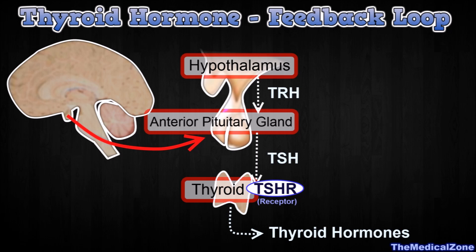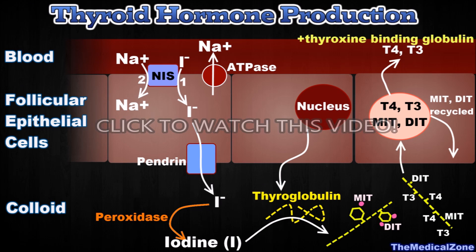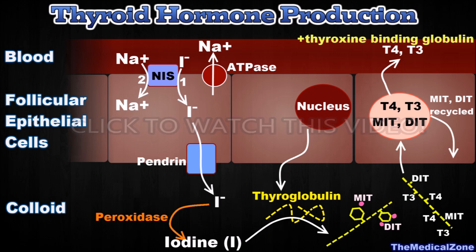To be more specific, this process activates most functional aspects of the thyroid epithelial cell that we discussed in the previous video, including iodide pumping, thyroglobulin synthesis, iodination, endocytosis and proteolysis, thyroid peroxidase activity, and hormone release.